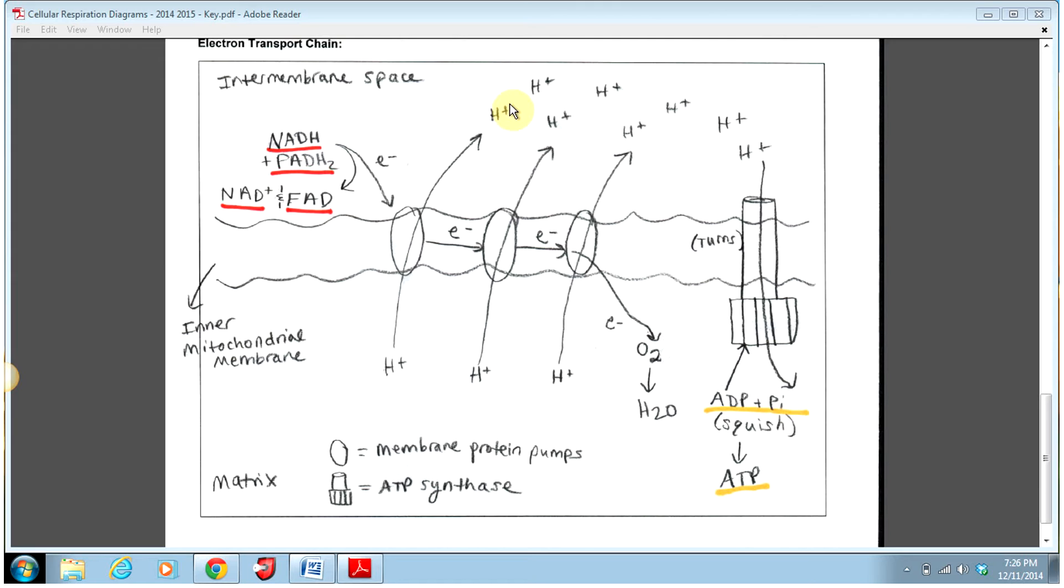As they're pumping these H pluses across, we are building a large concentration of H plus up in the intermembrane space compared to a smaller concentration in the matrix. At this point we've created a concentration gradient. We have a lot of H plus up here, very little H plus down here. A difference in concentration across a distance is called a concentration gradient. We'll call it a proton gradient because H pluses are commonly referred to as protons.